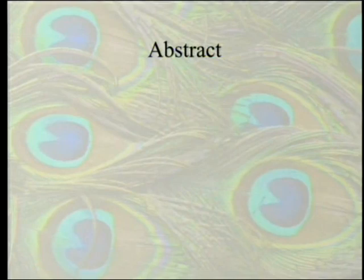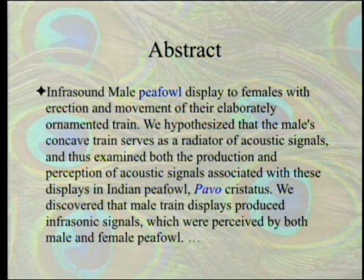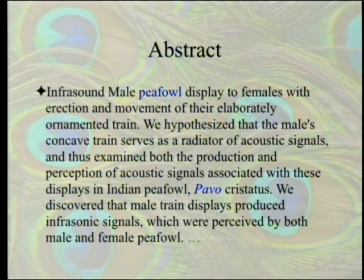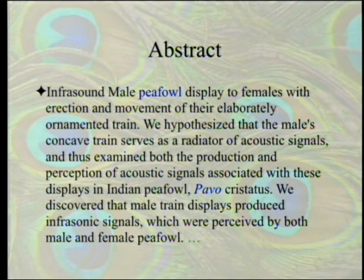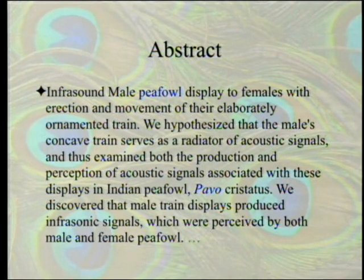Looking at references that cited the original study, one is on infrasound. Male peafowl display to females with erection and movement of their elaborately ornamented train. The hypothesis is that the male's concave train serves as a radiator of acoustic signals, and the study examined both the production and perception of acoustic signals in Indian peafowl. They discovered that male train displays produced infrasonic signals which were perceived by both male and female peafowl. So what's really going on is this big display is making sounds that you can't hear — and if that's the case, who cares how many eyes are on it?